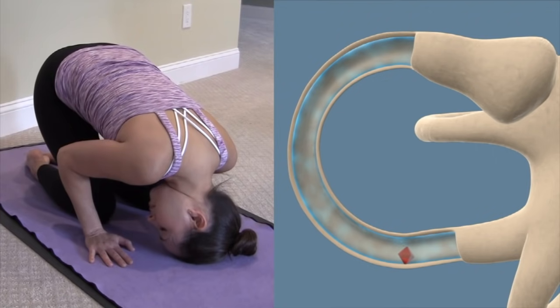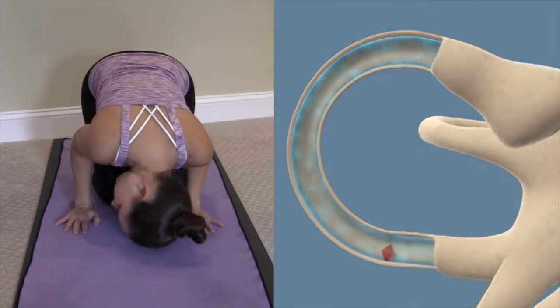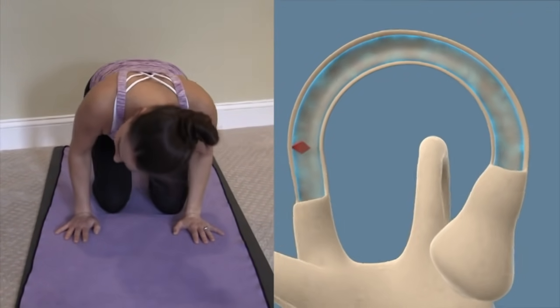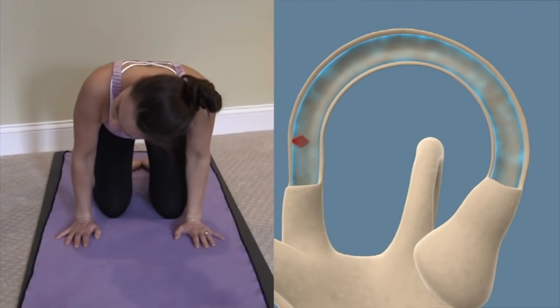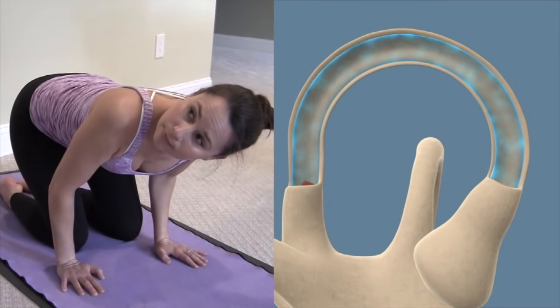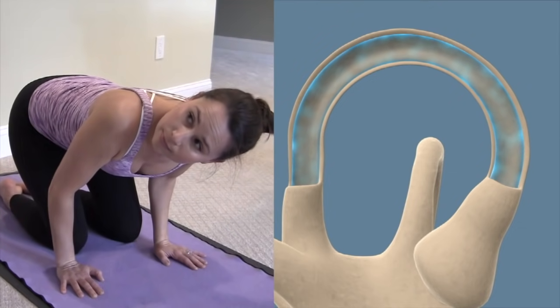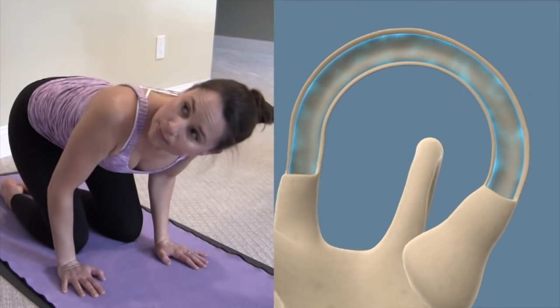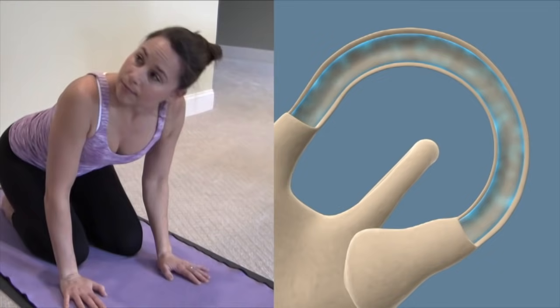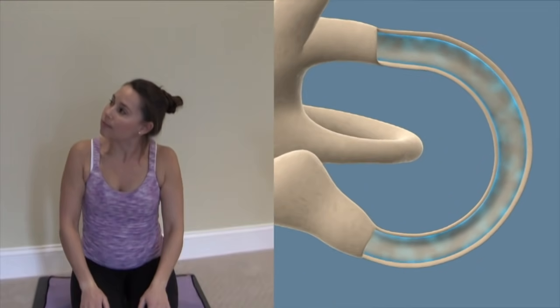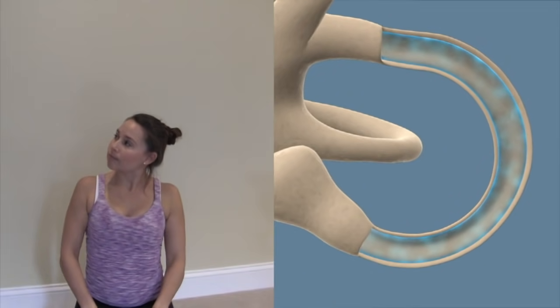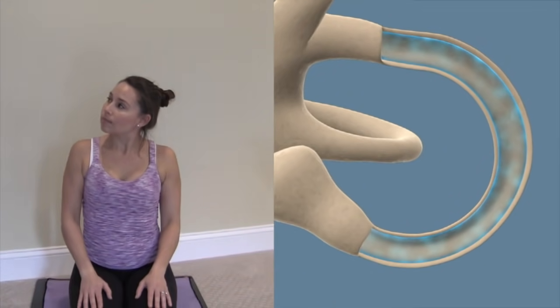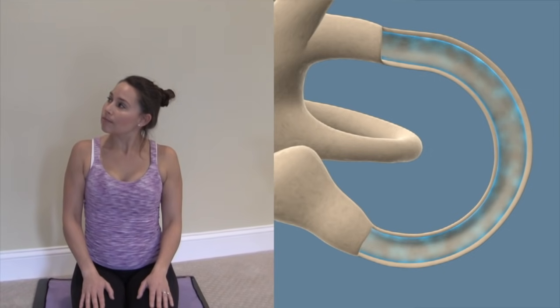It is also important that the head positions are angled correctly, or else the crystal will not settle to the correct position in the canal and the maneuver will fail. Additionally, if position changes are done too slowly, the crystal may not settle quickly enough due to lack of momentum, and the maneuver will also fail. Once the crystal falls out of the canal, the dizziness should resolve if it was due to posterior canal BPPV.